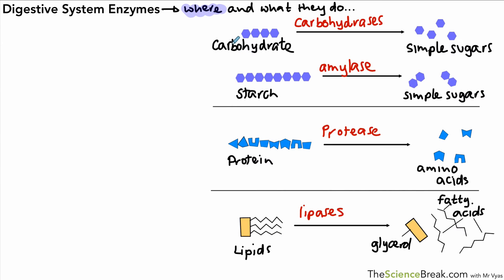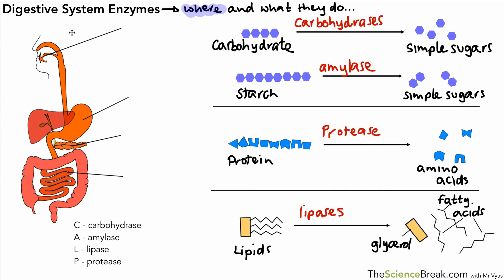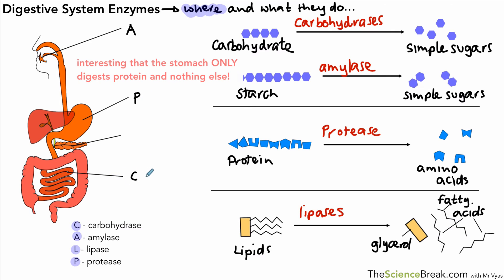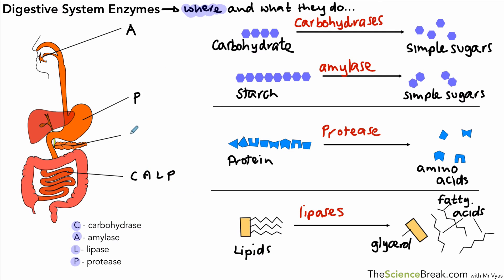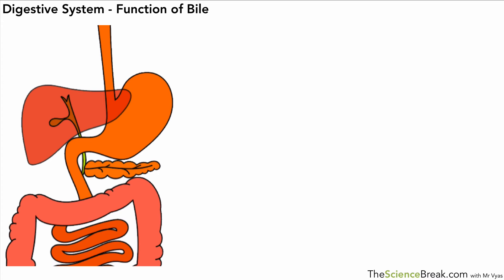We need to remember where these enzymes function. In the mouth, starch digestion occurs, so amylase is present there. In the stomach, it's proteases only. The small intestine produces all four types of enzymes, and the pancreas also produces all four. Importantly, the pancreas empties its enzymes into the small intestine — food does not pass through the pancreas itself.